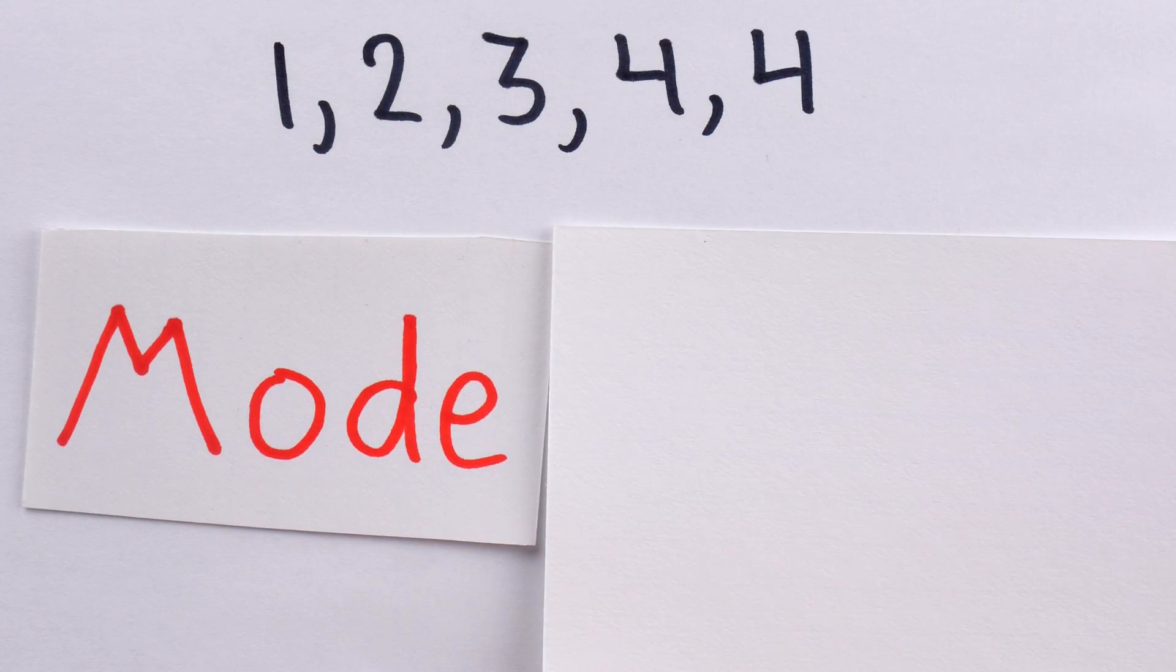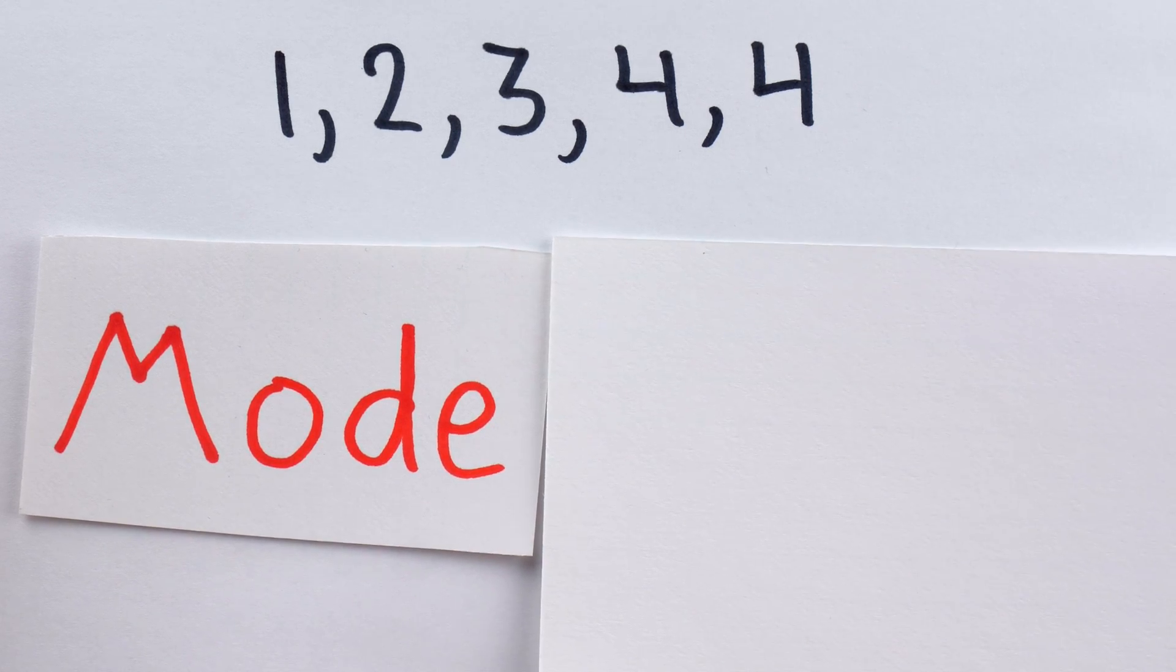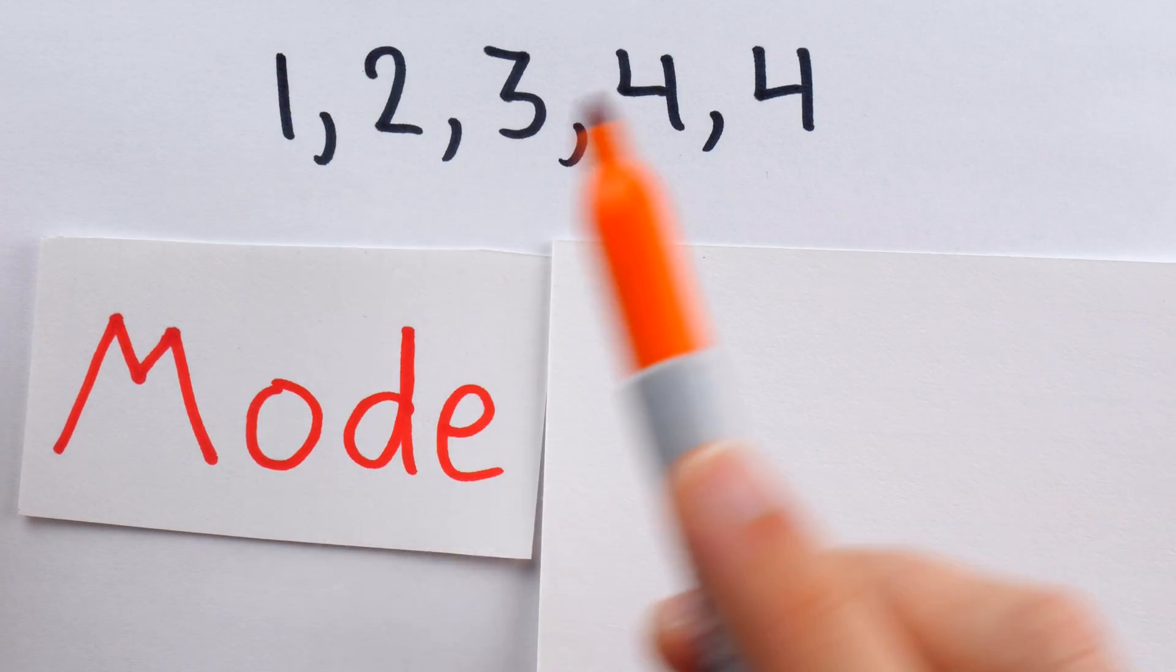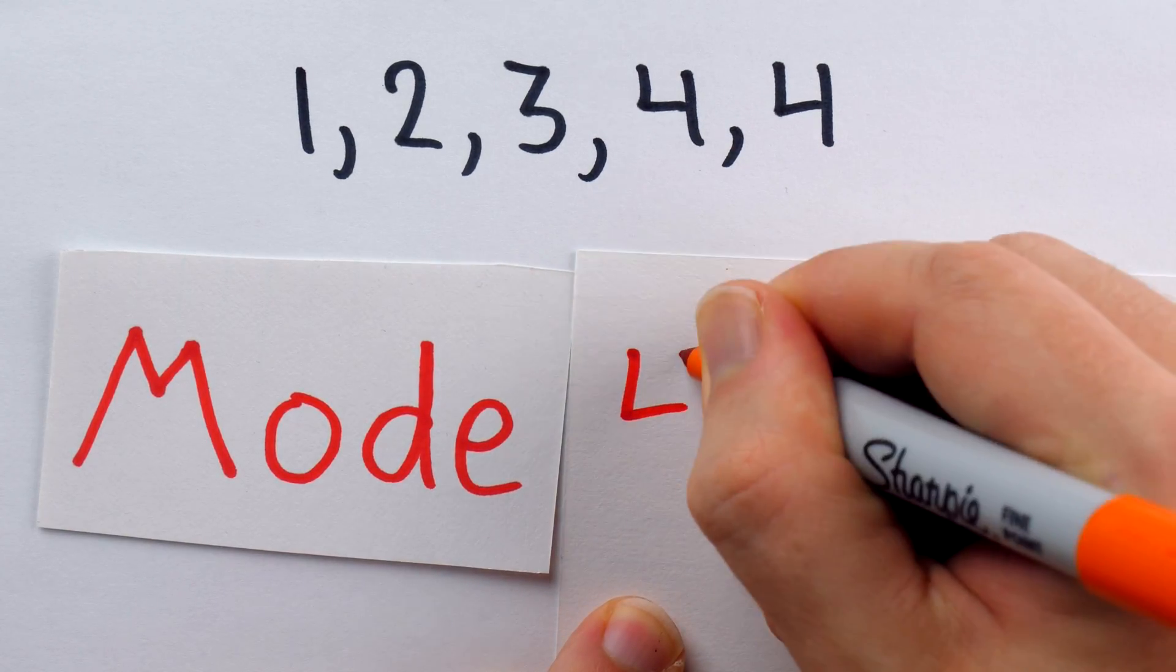Now, what about mode? How does mode work? Well, the mode of the data set is just the data point that occurs the most. Clearly, the most frequently occurring data point here is 4, which has occurred twice. So the mode is 4.